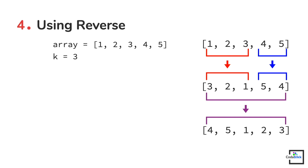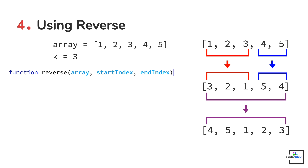We will do in-place reversing because creating another array would change the space complexity from O(1) to O(n), and we don't want that. So we will modify the given array directly, which means we do not need to return anything — use the void return type for this function. The parameter list should contain three arguments: the array we want to reverse, and the starting and ending index of the range within which the reversing needs to be done.